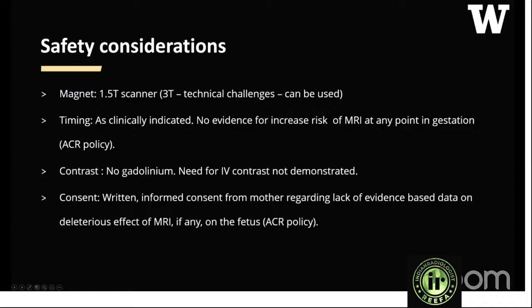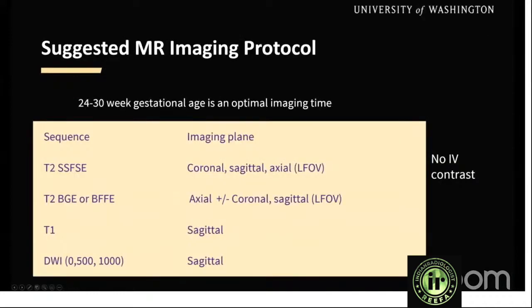We don't use any IV contrast — published studies have shown no need for it. We obtain informed consent from the mother due to lack of sufficient evidence on any deleterious effect of MRI on the fetus. Our protocol from 23–30 weeks includes single-shot fast spin echo sequences in three planes, T2-weighted balanced FFE images in two planes (coronal/axial or coronal/sagittal), a T1-weighted sequence, and diffusion-weighted imaging — typically axial, sometimes sagittal as well.